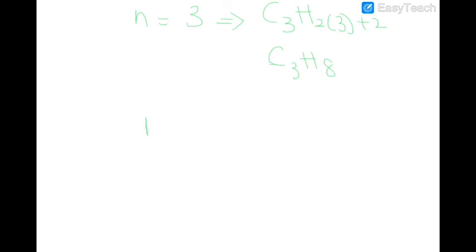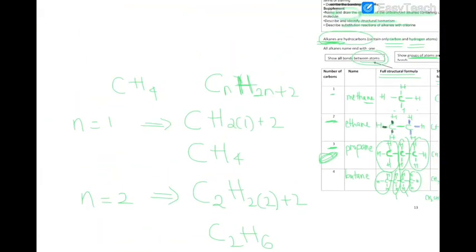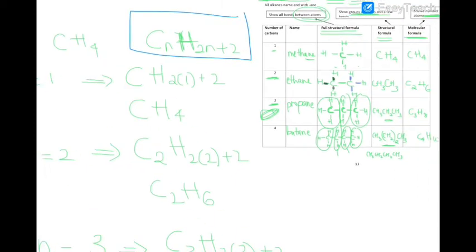Let's say you want to find the 10th member. C10, H2 times 10 plus 2. C10H22. So no need to go and draw 10 carbons to find how many hydrogen fit in. The general formula will tell you how many hydrogen will fit in the formula. So you see, the general formula can be used to predict the formula of any member of the homologous series.